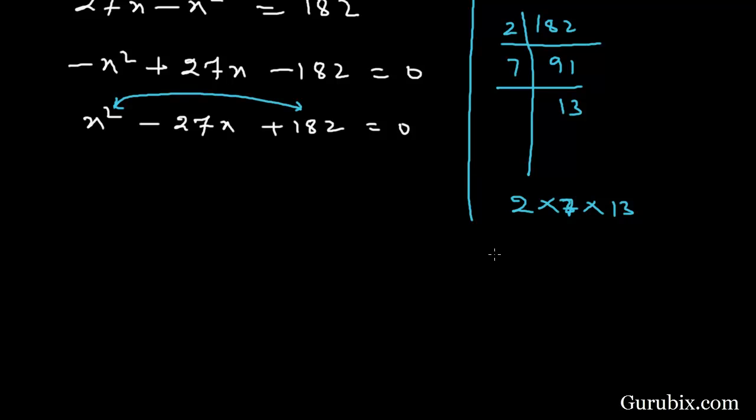We shall make two pairs from these factors such that the sum of those two factors equals minus 27 and the product equals 182. So we observe that 14 and 13. If we multiply 2 with 7, we get 14. 14 plus 13 is 27. We shall use minus sign, so we have minus 27. So we got our factors.